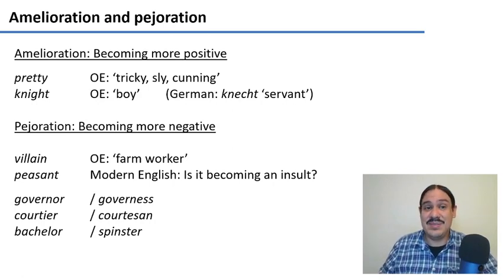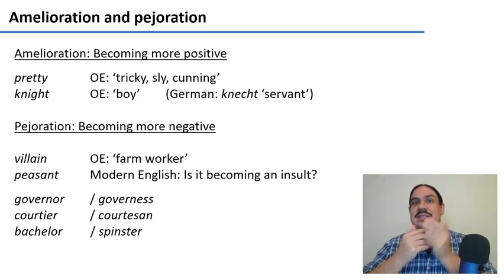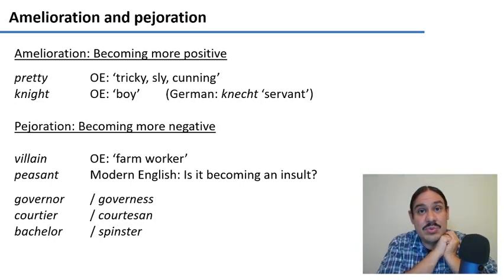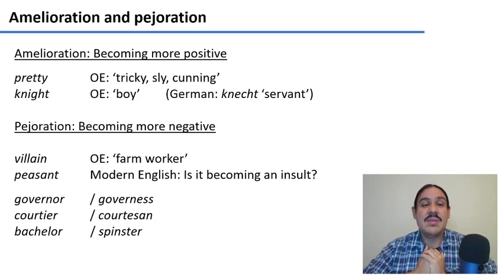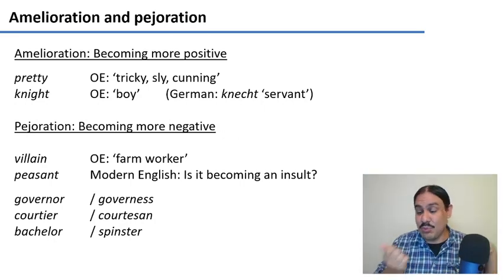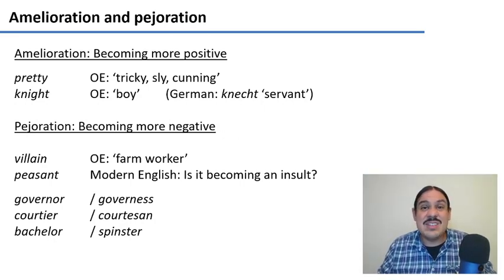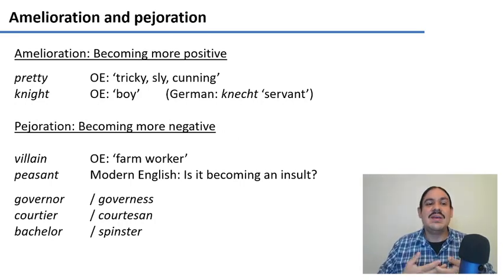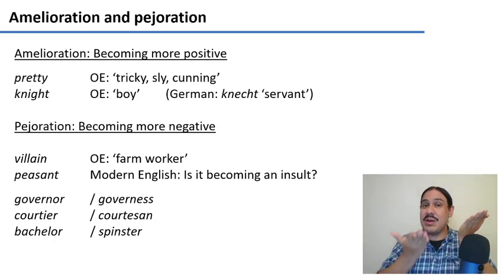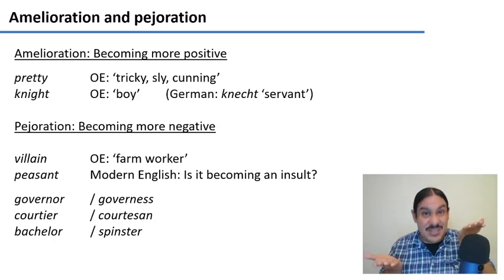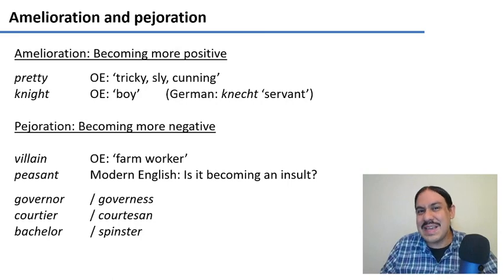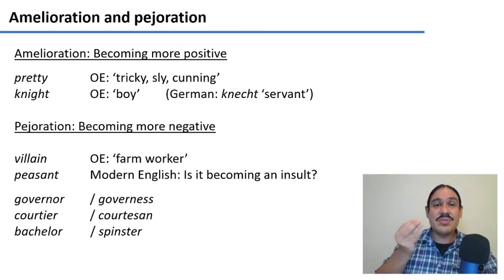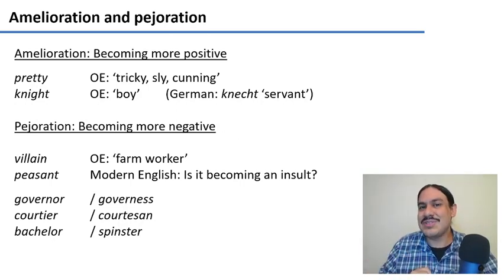Pejoration is the most interesting of the bunch — it's when words become more negative. And this can tell us a lot about the cultural biases of the people who speak the language. For example, the word 'villain' used to mean farm worker, but now it means someone who commits crime. 'Peasant' used to mean a person who lives in a rural area, but most of you would be very insulted if someone called you a peasant. This is a pattern of people from the cities taking words about people living in rural areas and turning them into insults — a pattern found in many urban communities around the world. Can you think of any other examples of words that have to do with rural areas that we now take as insults? I'll leave that question floating in your mind.